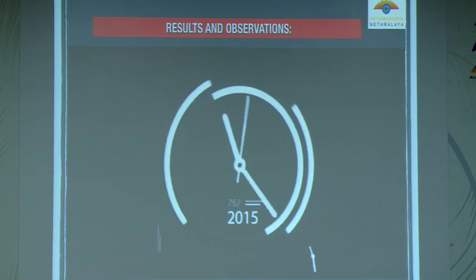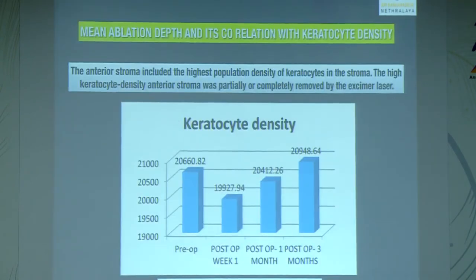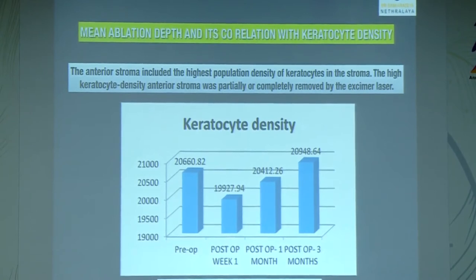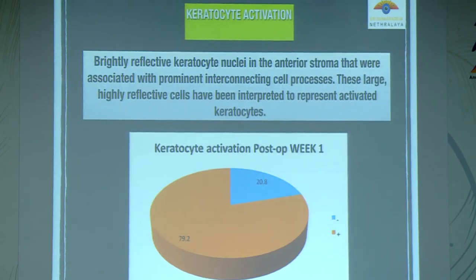Of 144 eyes of 72 patients undergoing LASIK, most were in the 21–25 age group with spherical equivalent ranging from minus 5 to minus 13.5 diopters. Mean ablation depth showed significant relation to keratocyte density. The anterior stroma — which has the highest keratocyte population density — was partially or completely removed by excimer laser. Pre-operatively the density was 20,660, which reduced in the first post-operative week before showing significant regeneration. Keratocyte activation was seen in 79.2% of patients, noted as brightly reflective keratocyte nuclei in the anterior stroma with prominent interconnecting cell processes. Mean flap thickness noted was 111 microns.